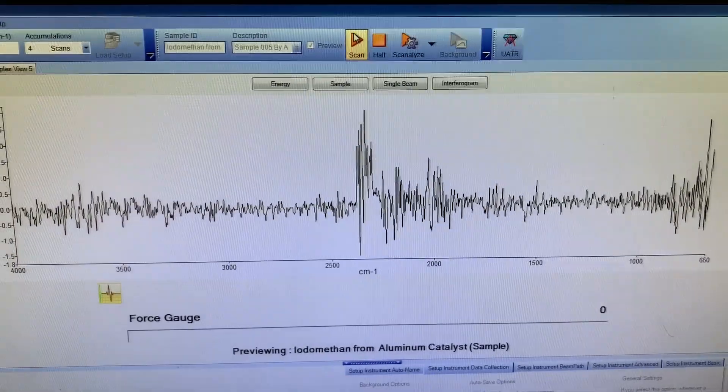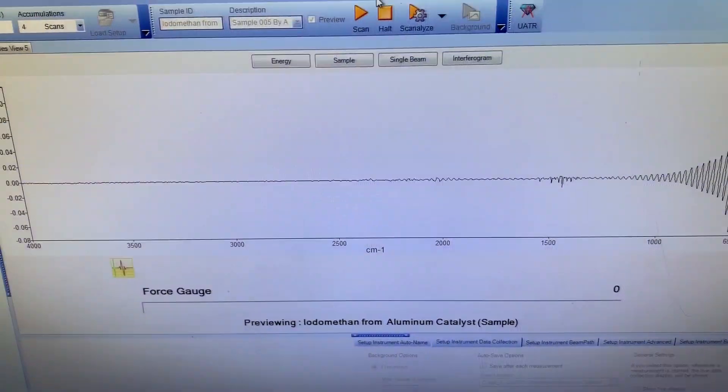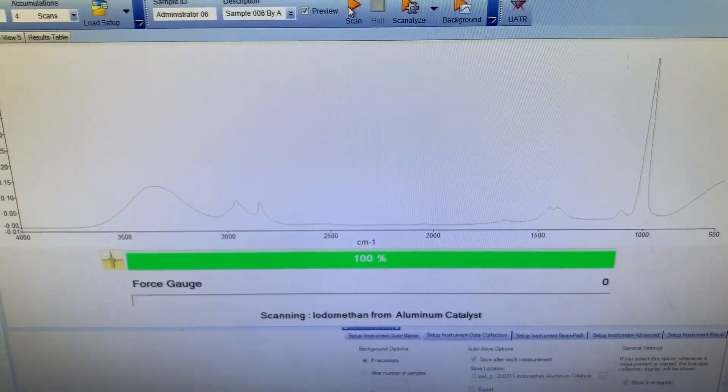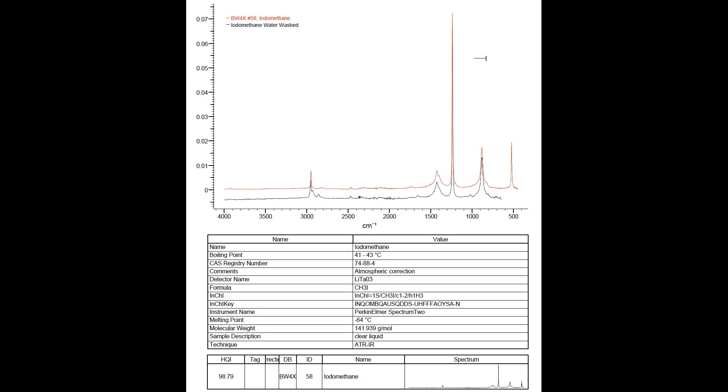Now that I've done that aqueous wash, I go through the same steps, placing the sample on the ATR and getting another spectrum that I then search. What this shows me is that I definitely made iodomethane. I have the red spectrum which is the reference spectrum from the database, the black spectrum is my sample spectrum, and in the bottom left-hand corner I have my HQI, my hit quality index. The closer that is to 100, the better my match, and it tells me I have a very good match and definitely have this compound.